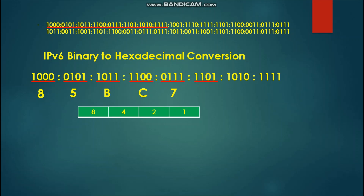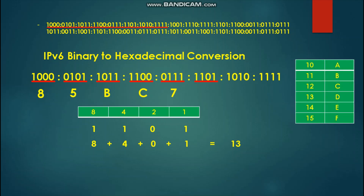Next, we solve for 1-1-0-1 and place it under our table. The values are 8 plus 4 plus 1, equal to 13. Since 13 is two digits, we use our table to find the equivalent letter, which is the letter D. We place D as our hexadecimal result.